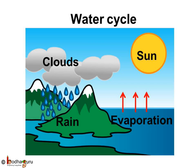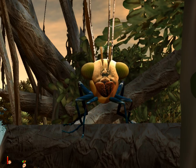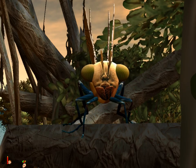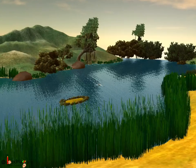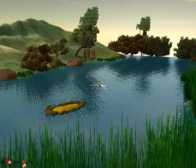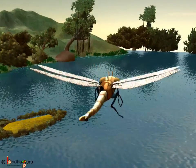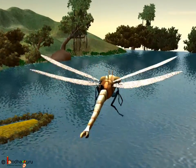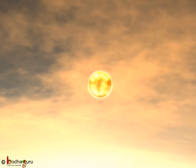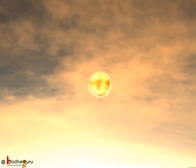The water cycle is the journey water takes as it circulates from the land to the sky and back again to the land. Kids, now your special friend Dragonfly will show you the very special journey of water. The sun plays an important role in this journey.